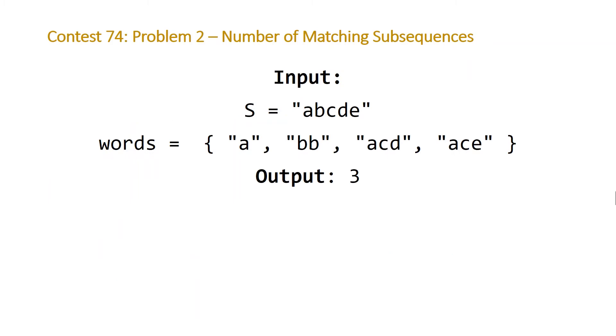So the example that LeetCode gives us, we have string s equal to a, b, c, d, e, a, b, c, d, e, and our array of words contains four words, and they are the single character a, b, b, a, c, d, and a, c, e. So if we look for each one of these words in our string s, we'll end up finding three of them. So we can find the string a, obviously. b, b, we cannot find. a, c, d, we can find. And a, c, e, we can also find. So for this example, we would output three. Let's take a look at another example that's a little bit more complicated.